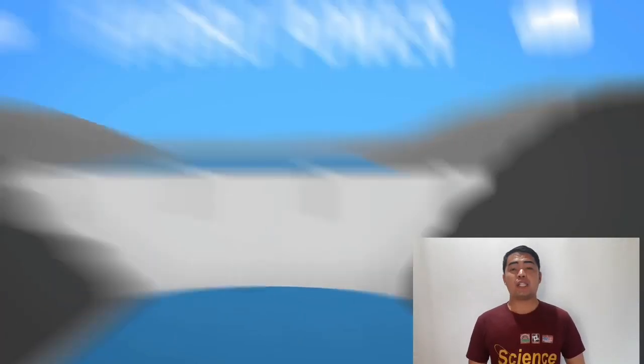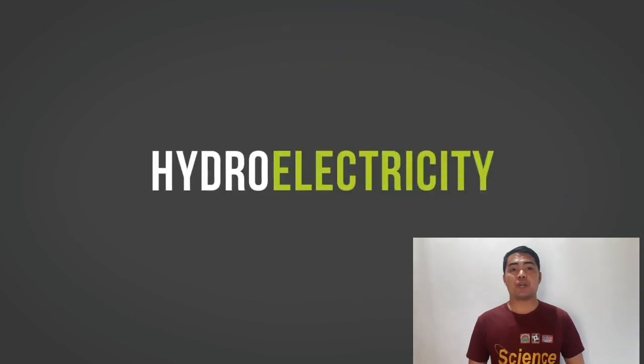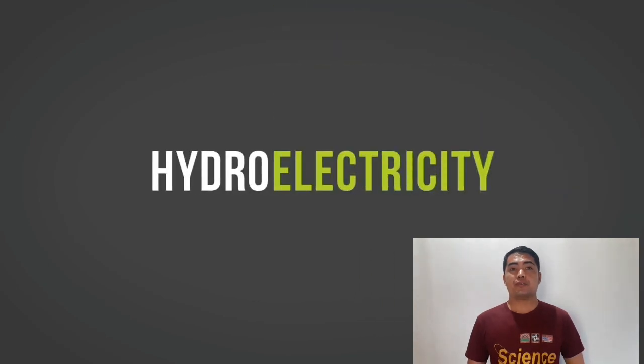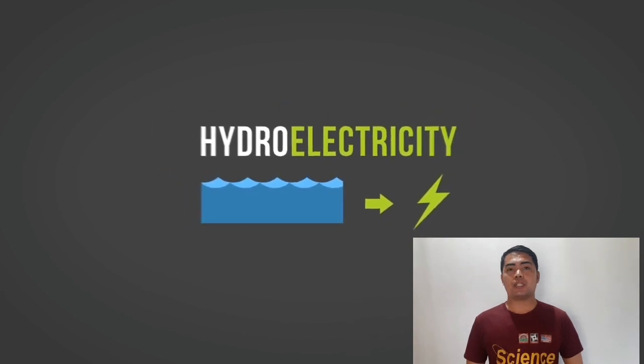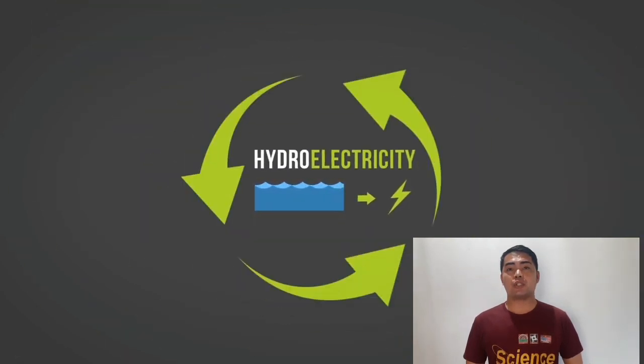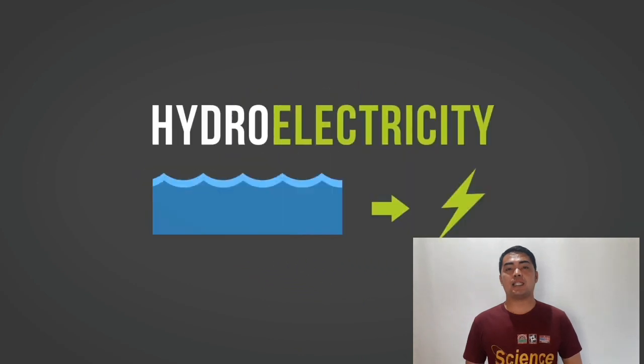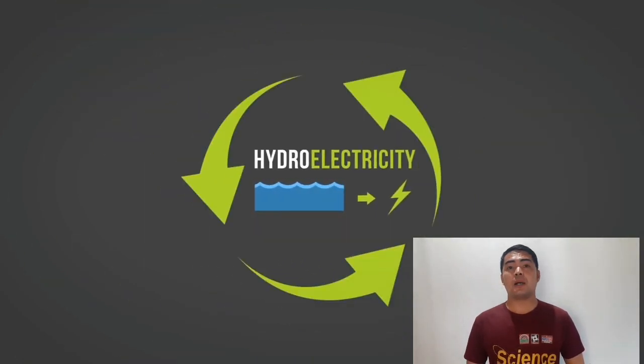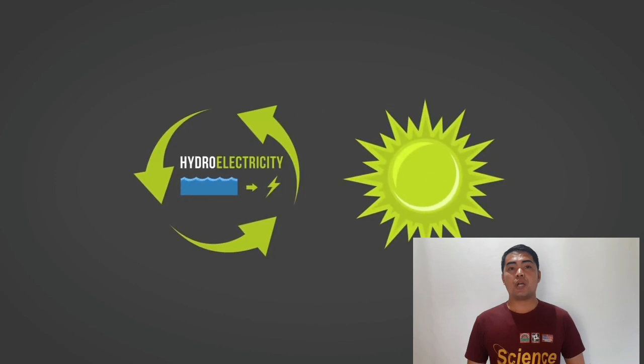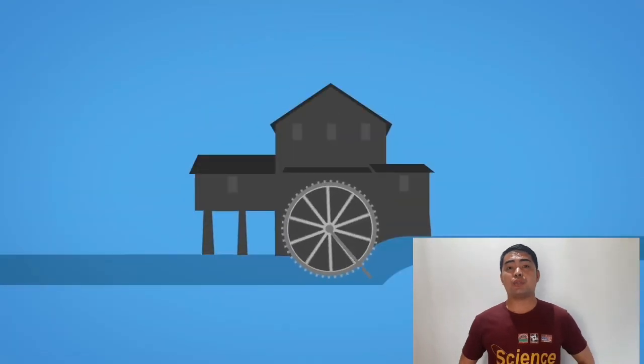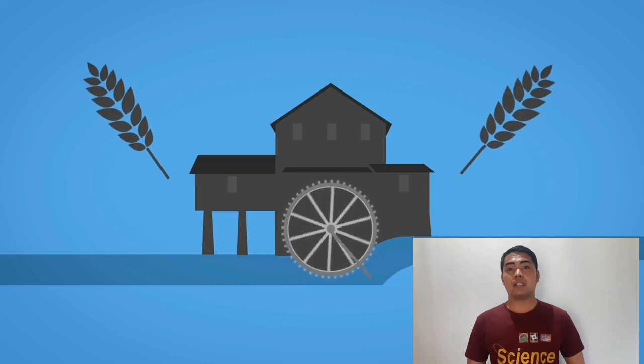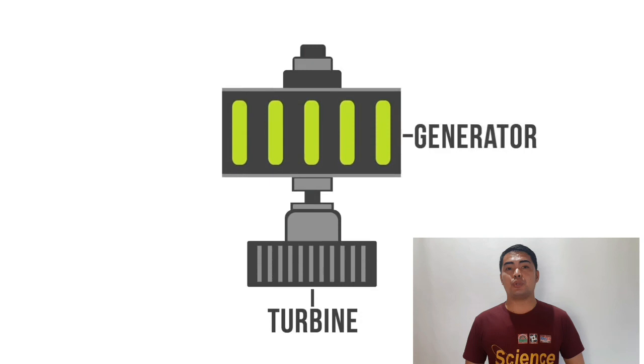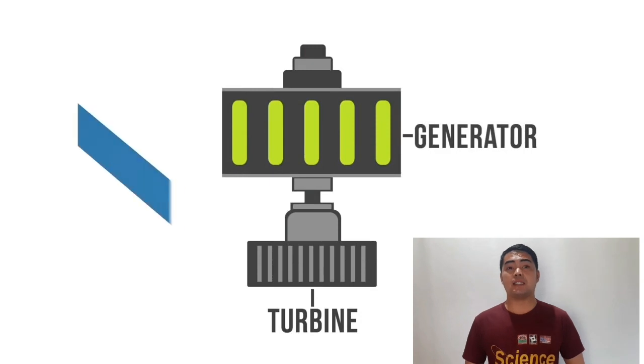Hydropower or hydroelectricity refers to conversion of energy from flowing water into electricity. It is considered a renewable energy source because the water cycle is constantly renewed by the sun. One of the first uses of hydropower was for mechanical milling, grinding grains, but today modern hydro plants produce electricity using turbines and generators.